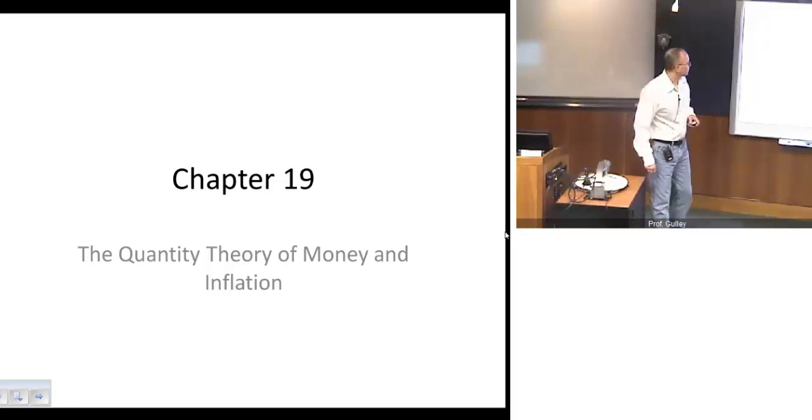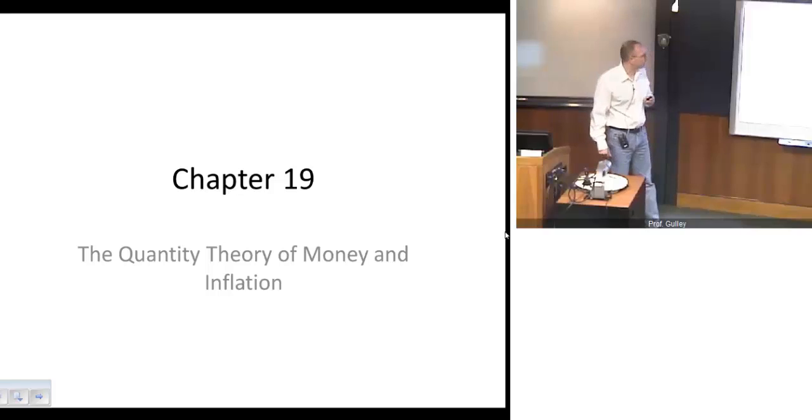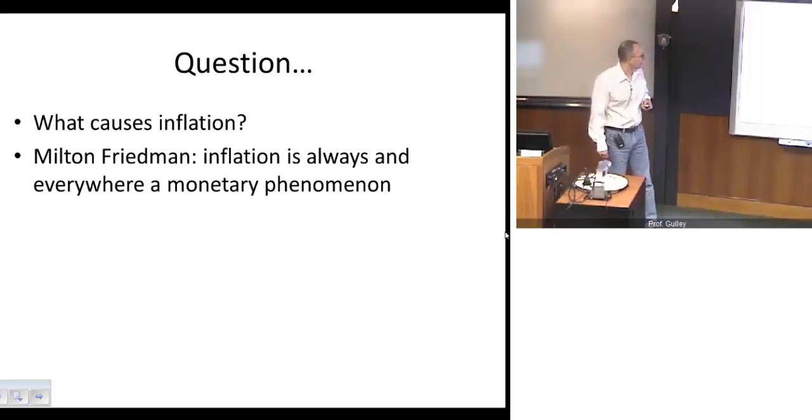All right, well, thank you, and welcome back. So today, we're going to be looking at Chapter 19 in Mishkin's Money and Banking, and we're going to look at some of the reasons why we observe very high rates of inflation in some countries periodically. And so our bottom line question is, what causes inflation? And if you listen to the late Milton Friedman, inflation is always and everywhere a monetary phenomenon. And so what we want to do here is see, is there evidence to support that concept?